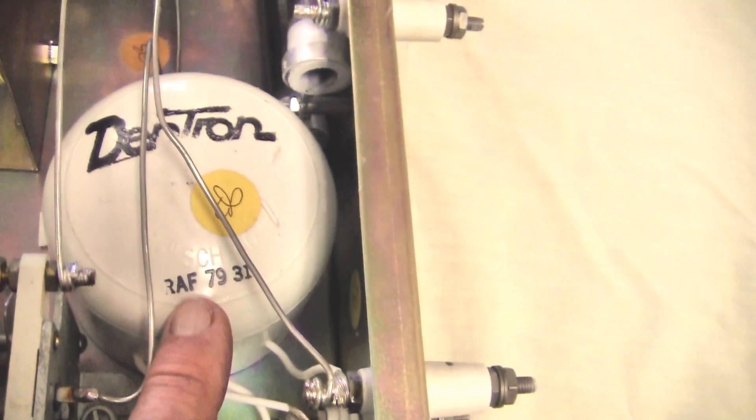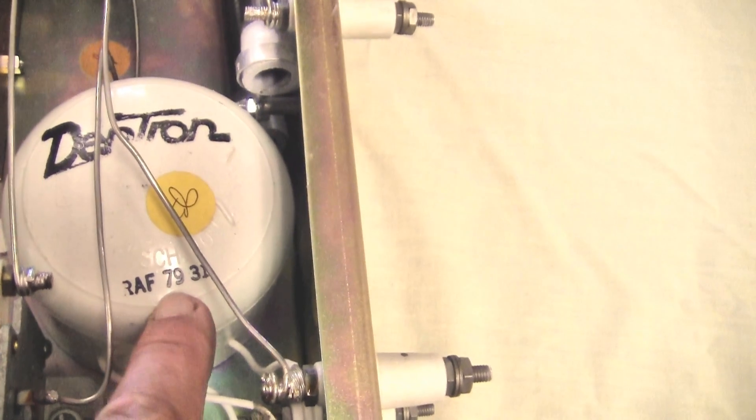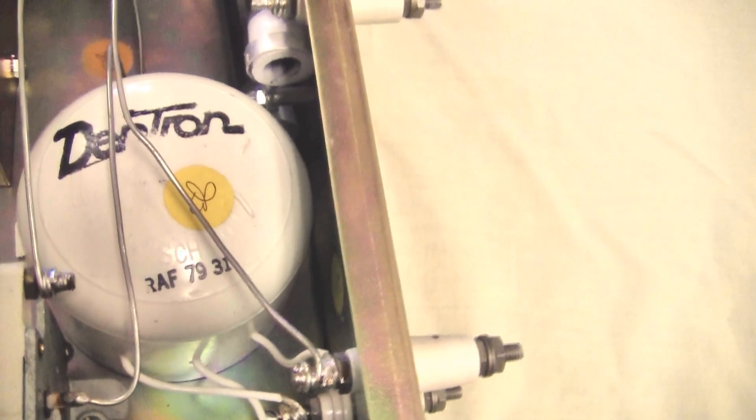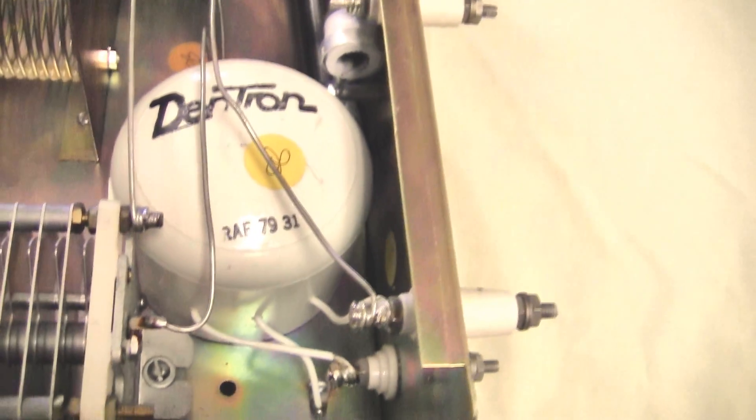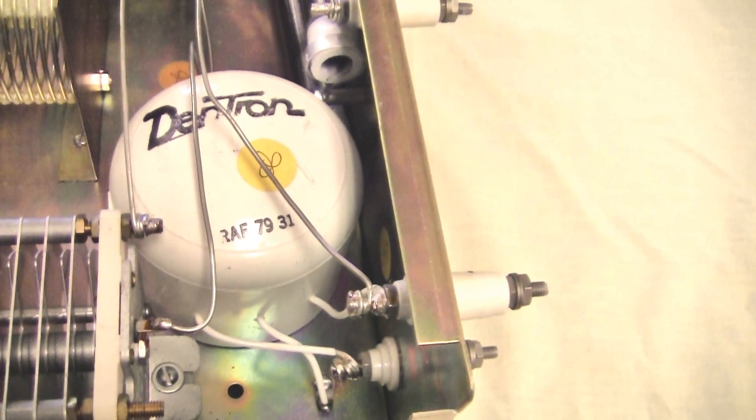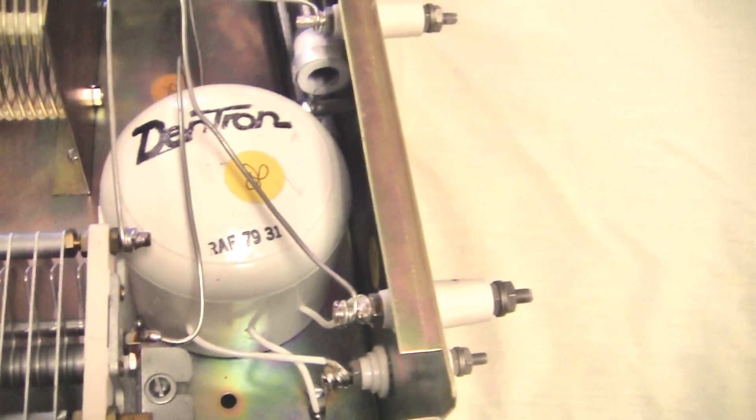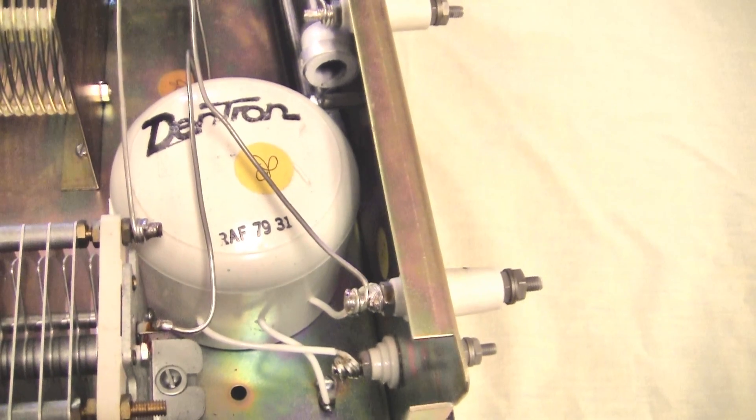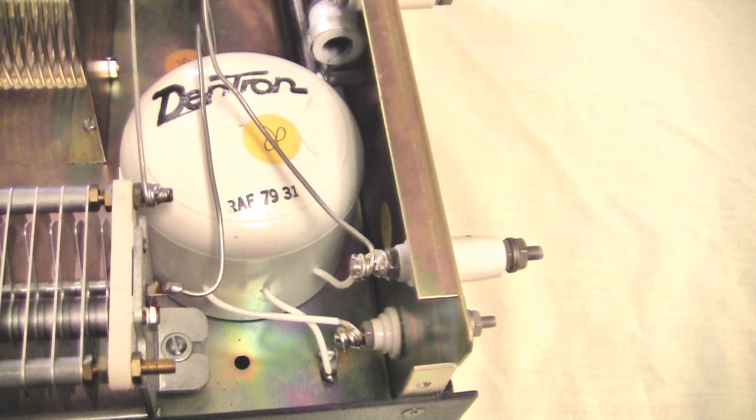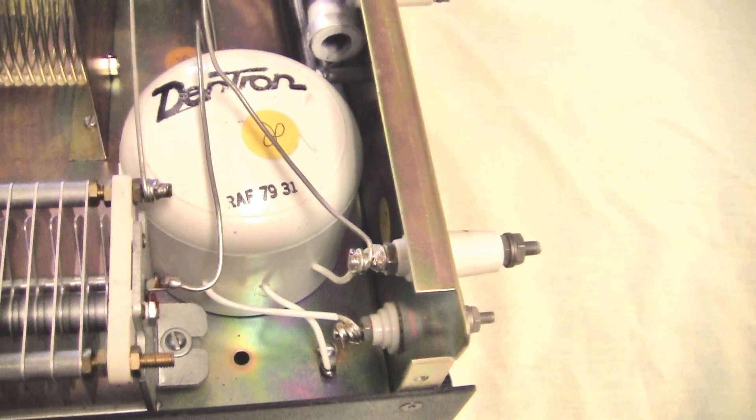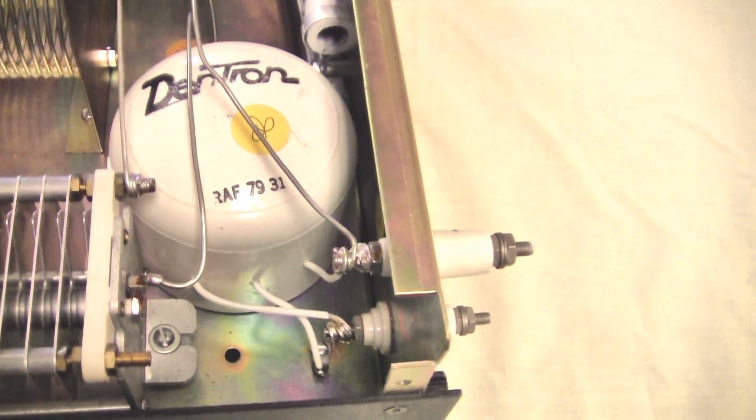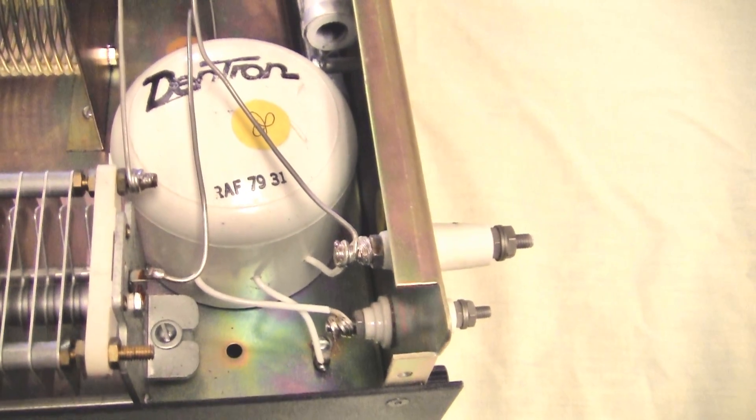I see a date here. I expect that this says 1979, 31st week, if this is standard date coding. So this unit was made in 79 or later is my guess. I'm going to give you a little history about the Dentron Company. It went out of business and went through several iterations. And I believe the final result is Ameritron, which is still currently sold. I believe it originally came through the Dentron origination. We'll put a little history here in the text below the video.